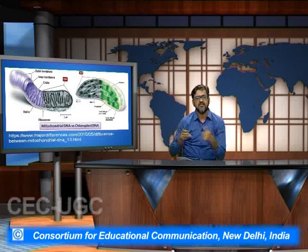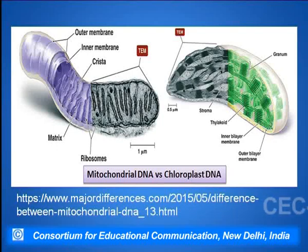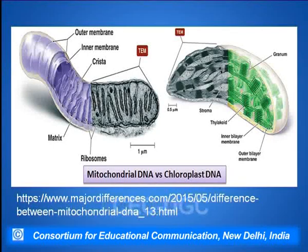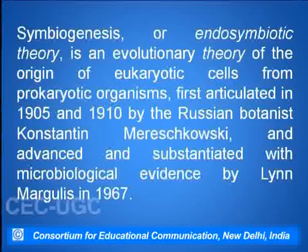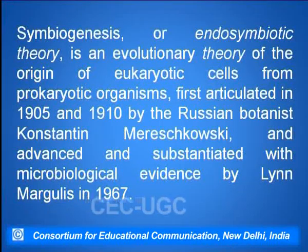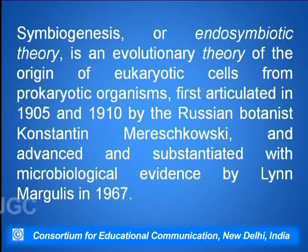This is a diagrammatic representation of the mitochondrial DNA and the chloroplast DNA, and how exactly they have been formed. There is a hypothesis for this called the symbiont theory or endosymbiotic theory — also called symbiogenesis — which is an evolutionary theory of the origin of eukaryotic cells from prokaryotic cells. This particular theory was first articulated in the year 1905 and 1910.